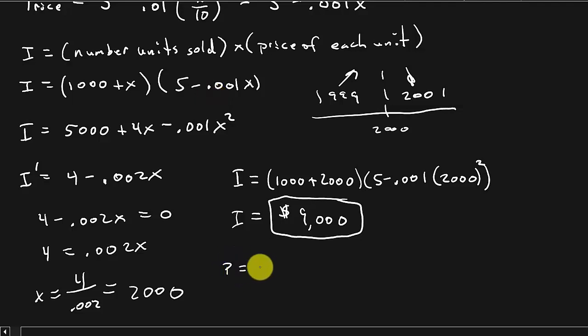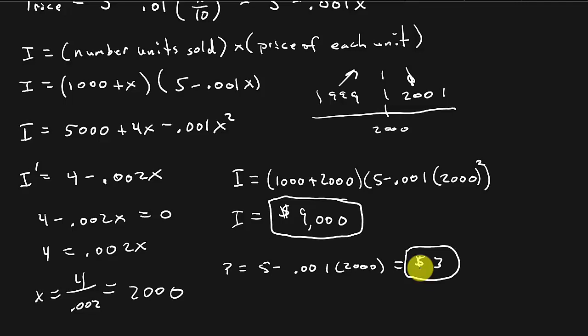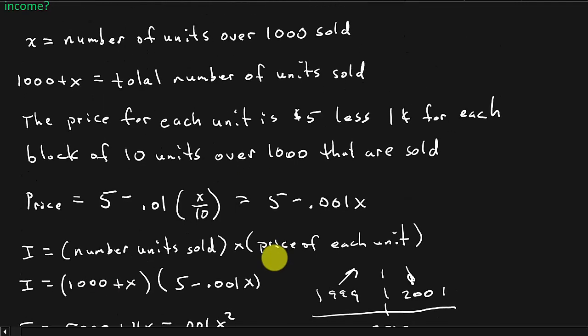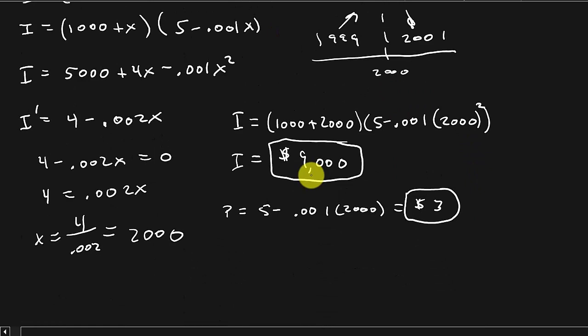The price at the maximum income is P equals 5 minus 0.001 times 2,000, which equals $3 per unit. Note that X is the number over 1,000, so we sold a total of 3,000 units. So the maximum income is $9,000, and the unit price that gives this income is $3.